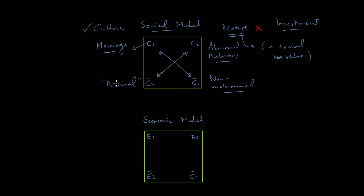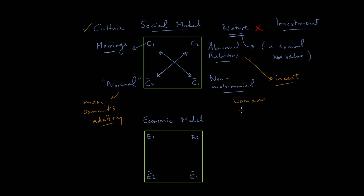It may help to give some examples. Obviously marriage itself is already an example. For abnormal relations, this might be something like incest — seen as natural but definitely forbidden. If we think of the bottom part of the square, in some cultures adultery is treated in different ways. For instance, if the man commits adultery, the culture might say, well, that's normal, that's what men do — it's not forbidden. Whereas if the woman commits adultery — you can see the double standard — the culture's judgment is a little harsher towards the woman.